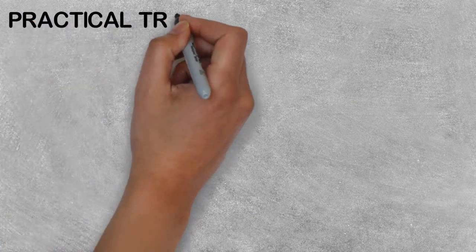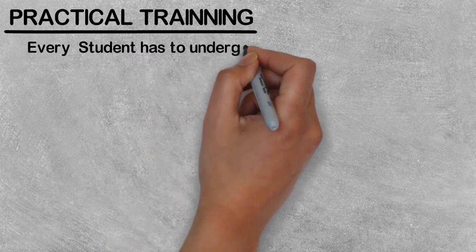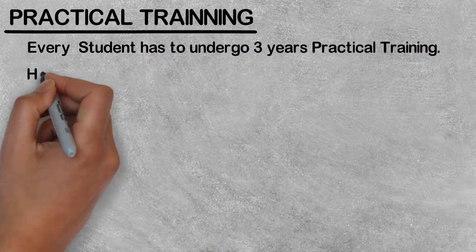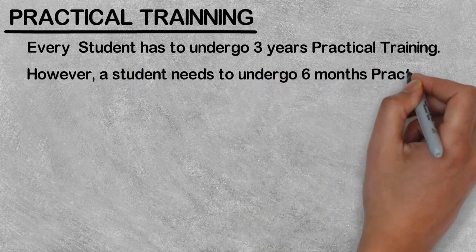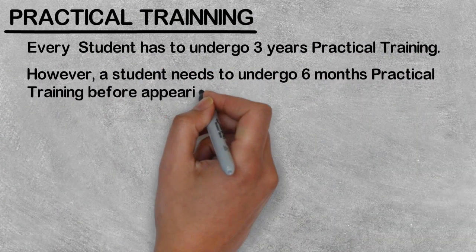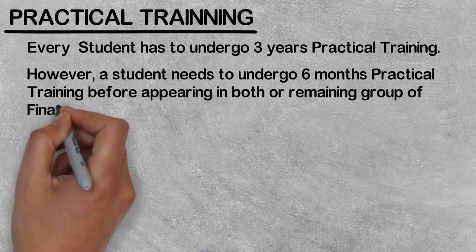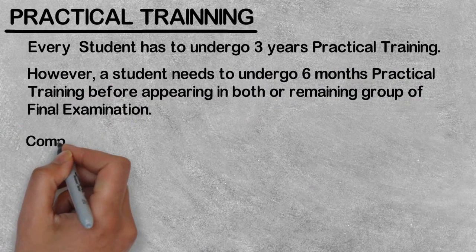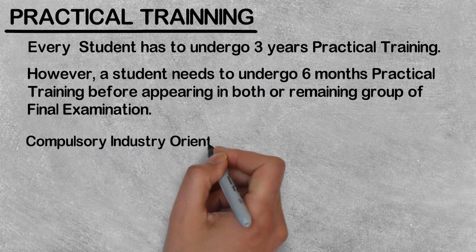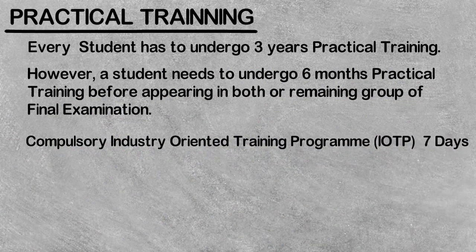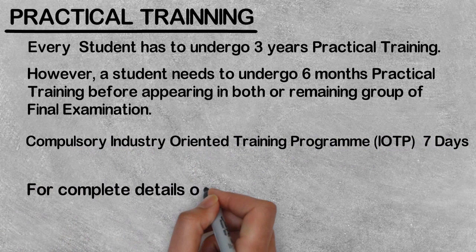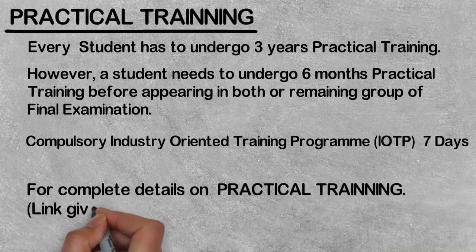Now let's talk about Practical Training. All students are required to complete 3 years of Practical Training. After completing 6 months of Practical Training, students become eligible for the Final exam in both groups. The remaining training must be completed after the Final. There is also a compulsory 7-day Industry Oriented Training. A separate video on Practical Training is available — the link is in the description.